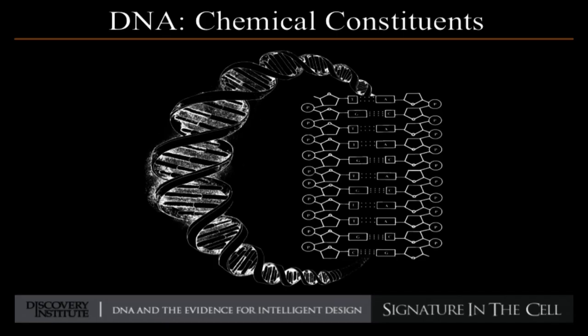Along the interior of the molecule are two copies, running in opposite directions, of the informational instructions. They're encoded using those bases — the A's, C's, G's, and T's, also known as nucleotide bases. It's the specific arrangement of those nucleotide bases that constitutes the information in the DNA molecule. The question is: could you explain the specific arrangement of the bases by reference to self-organizational forces of attraction? Could chemistry explain that information?